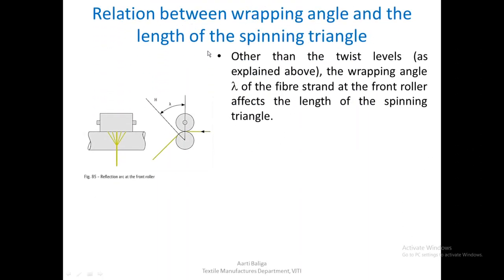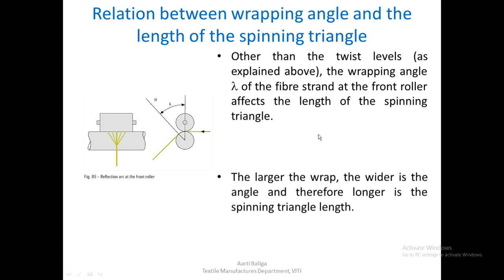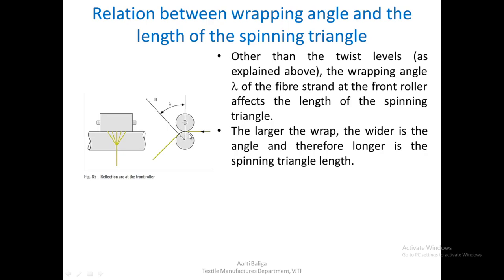Now let us look at the relation between the wrapping angle and the length of the spinning triangle. Other than twist levels, the wrapping angle lambda of the fiber strand at the front roller also affects the length of the spinning triangle. Viewing the rollers from the side, the fibers make a wrap around the bottom roller after which the fiber strand leaves the roller surface. This angle is termed lambda. The larger the wrap angle, the longer the spinning triangle length. So this wrap angle decides what the length of the spinning triangle will be.